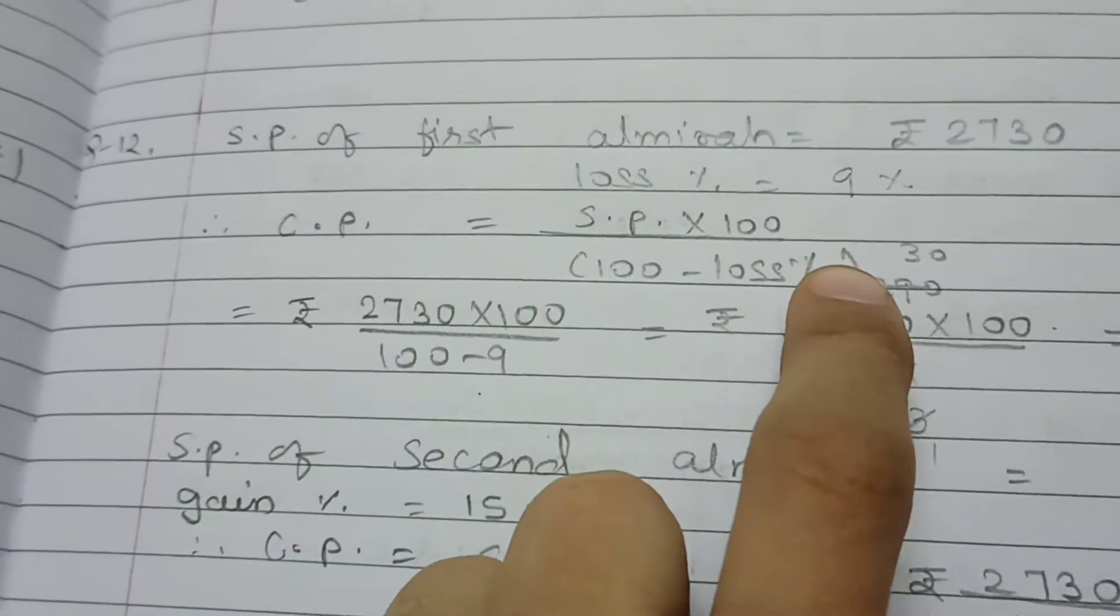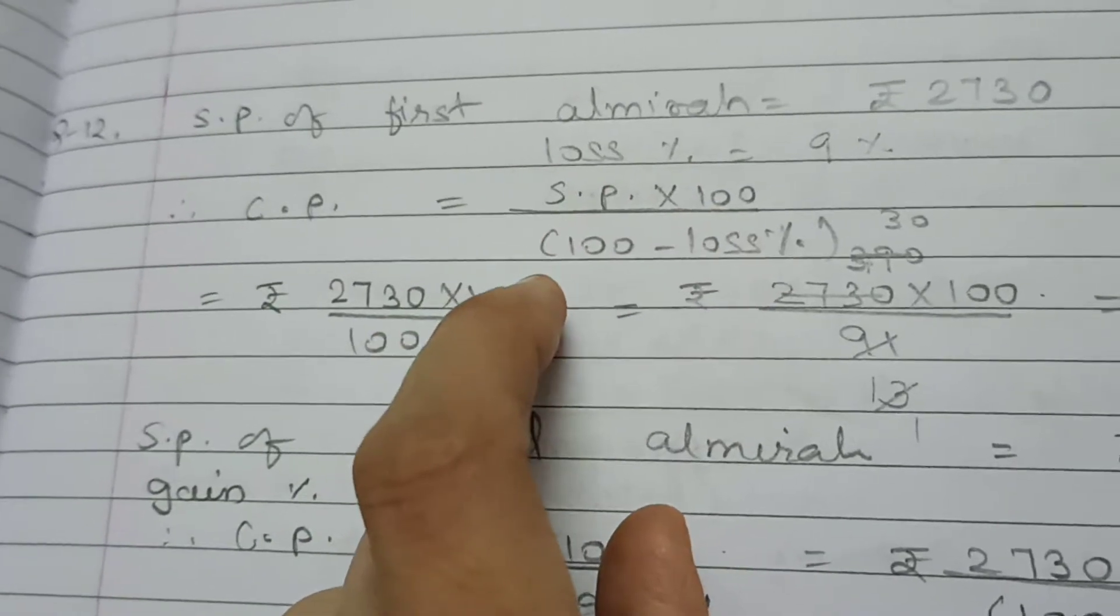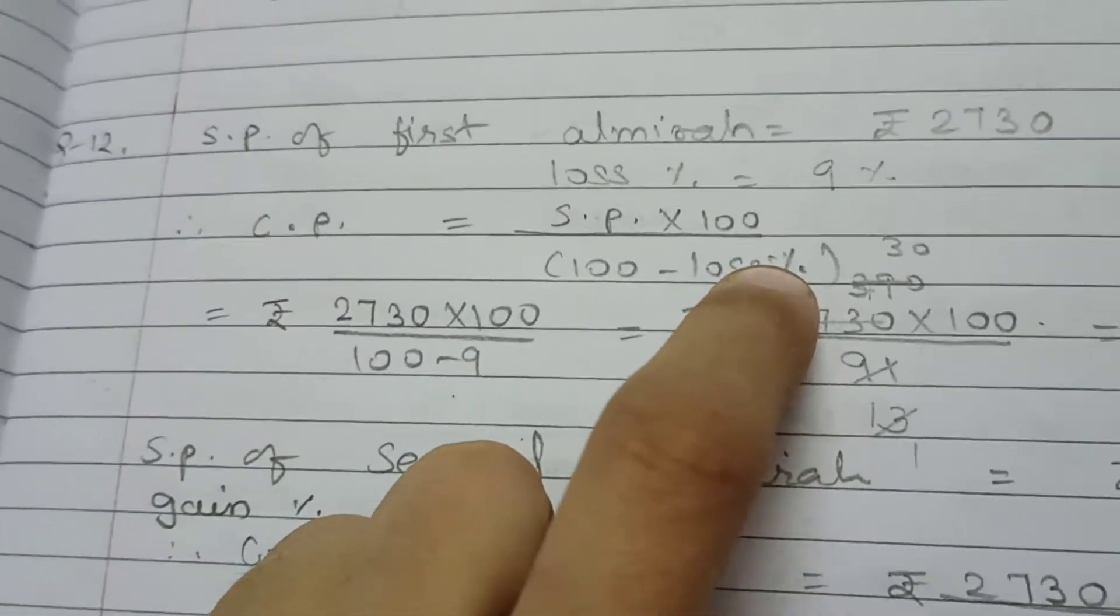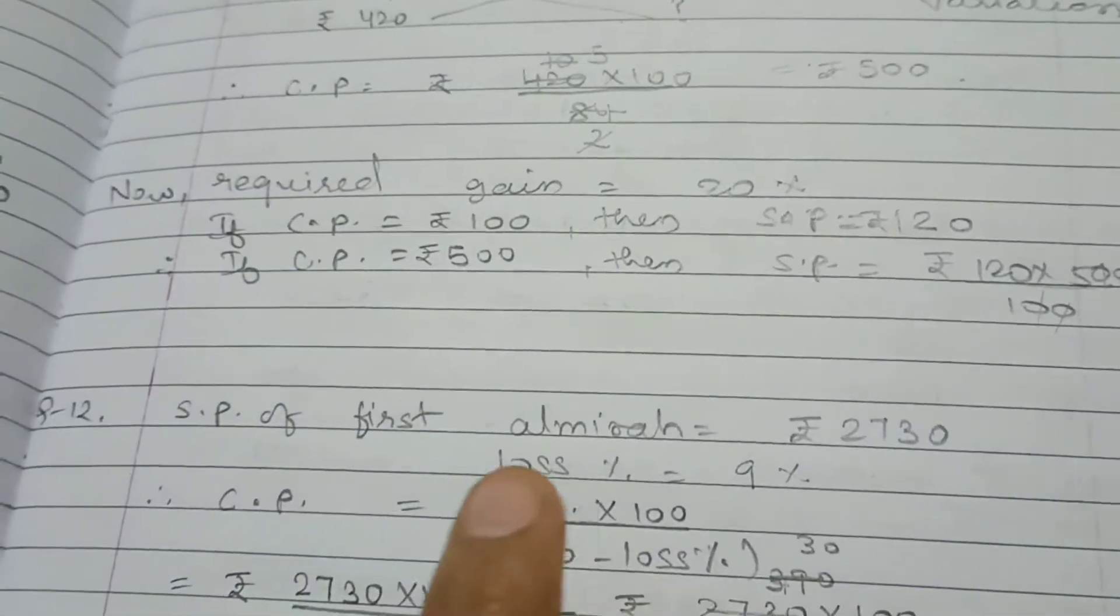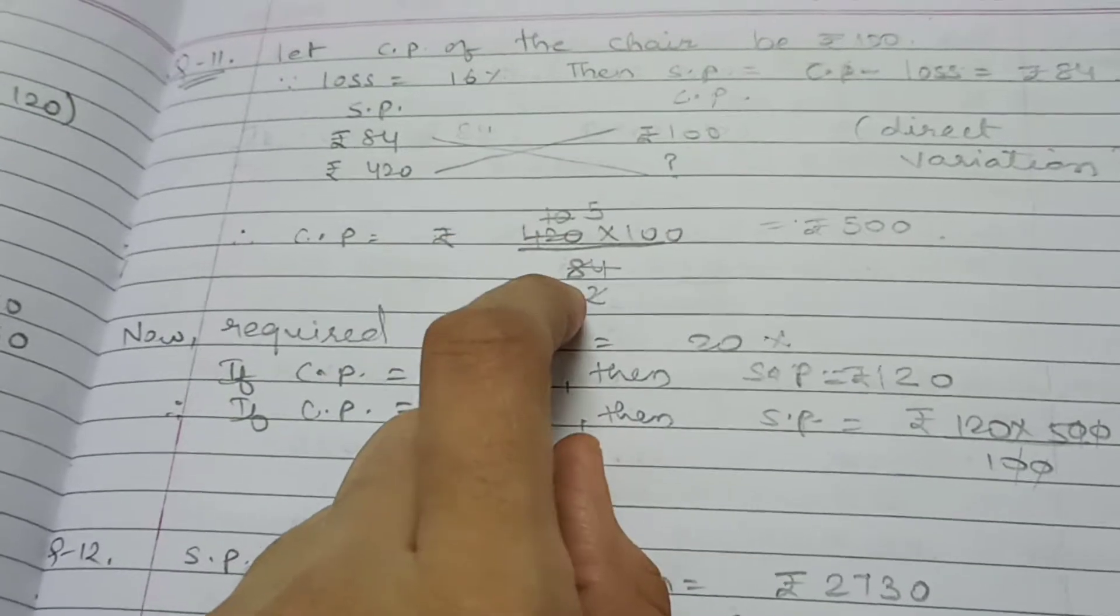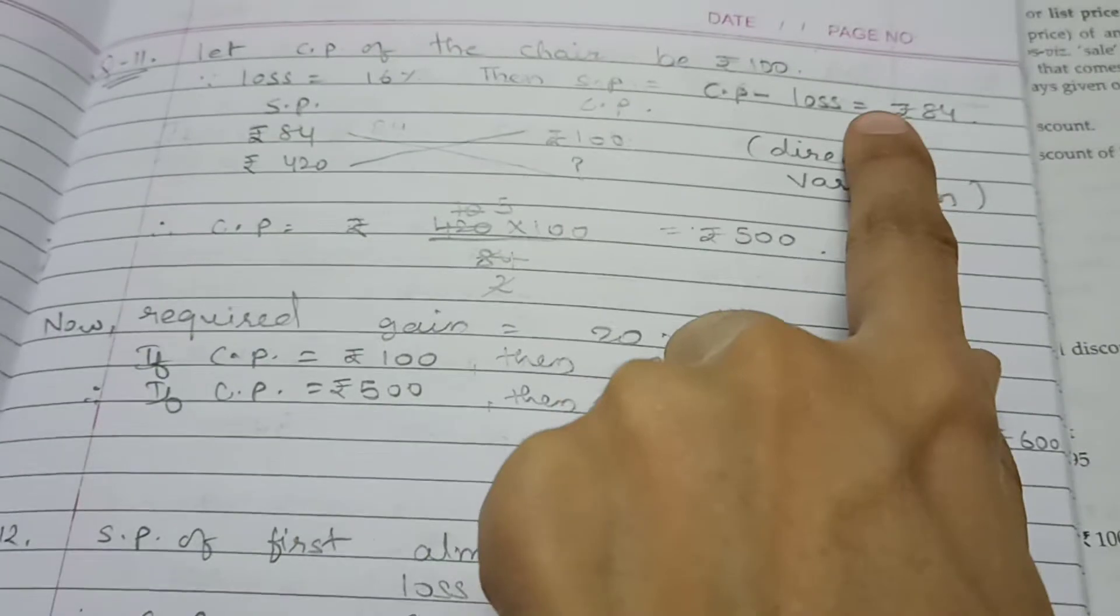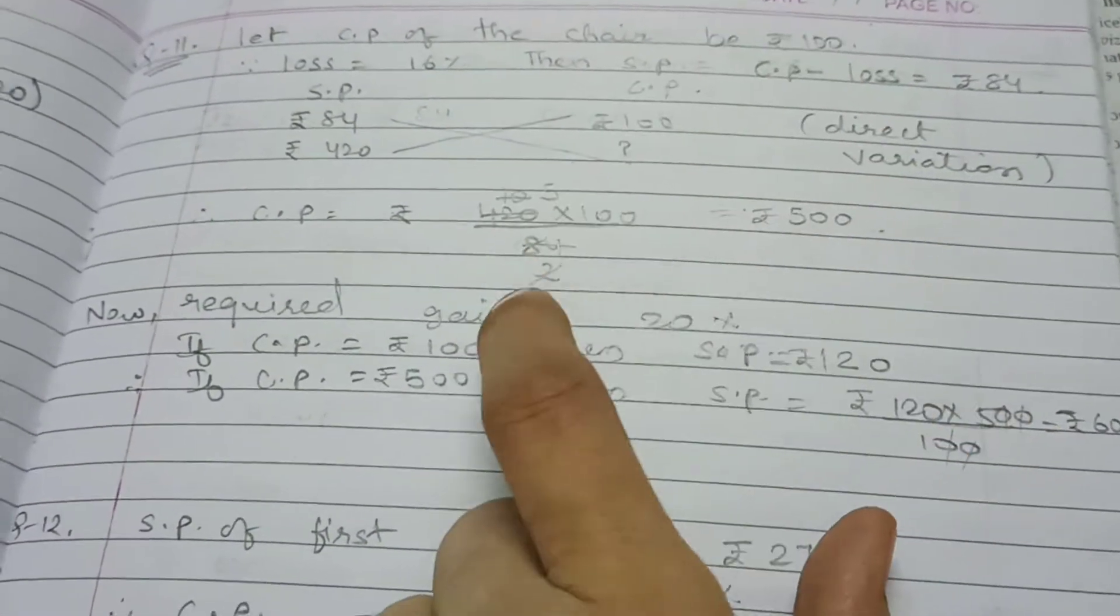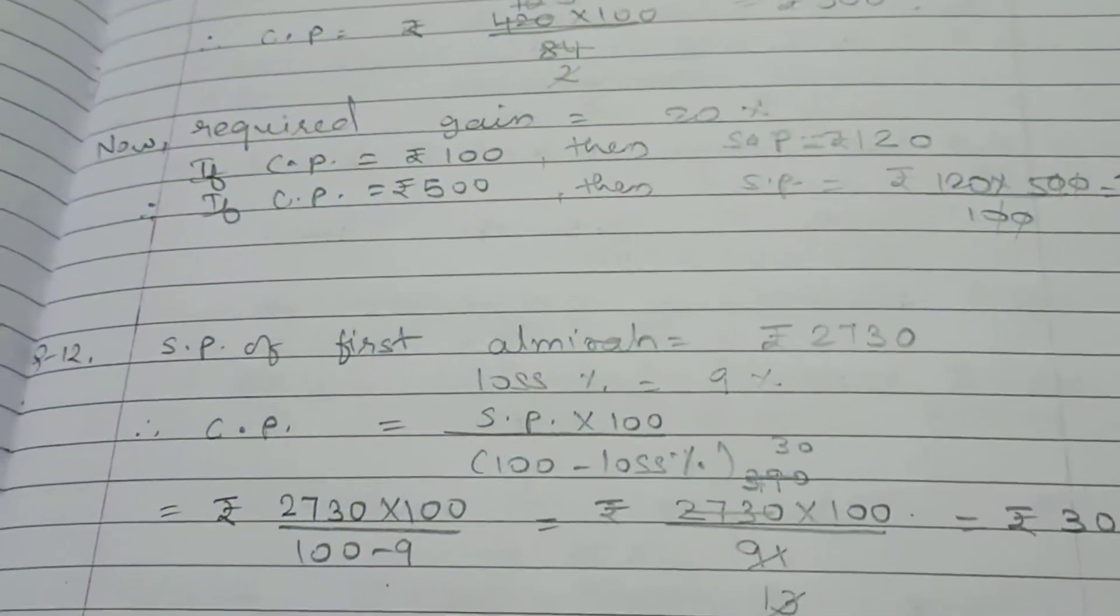When it was loss of 9%, what was CP? SP multiplied by 100 divided by 100 minus loss percentage. Right? This is the formula for CP. See, on the last example, we solved it this way and you can solve it this way also. This is the same formula, 100 minus loss percentage.